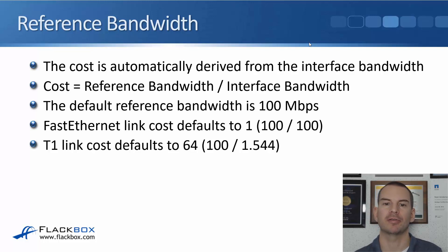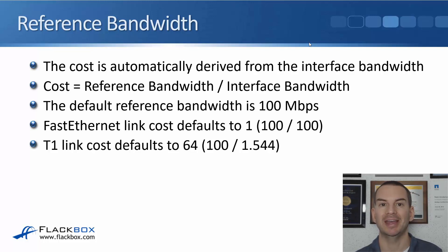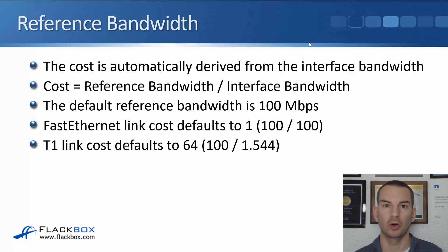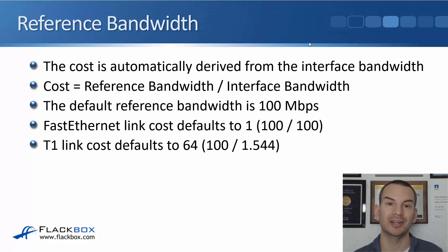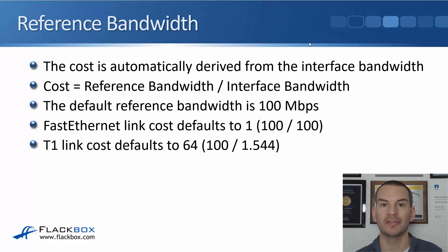The cost for OSPF is automatically derived from the interface bandwidth, so a higher bandwidth interface will be automatically preferred. The cost is calculated as the reference bandwidth divided by the actual interface bandwidth, and the default reference bandwidth is 100 megabits per second. A Fast Ethernet link defaults to a cost of 1 (100 divided by 100). A serial T1 interface at 1.544 Mbps defaults to a cost of 64 (100 divided by 1.544).